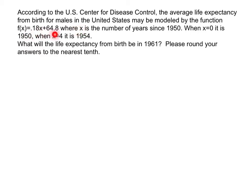X in this equation represents the number of years since 1950. So if X equals 0, it is 1950 — meaning it is 0 years since 1950. If X equals 4, it's 1954; it's been 4 years since 1950.